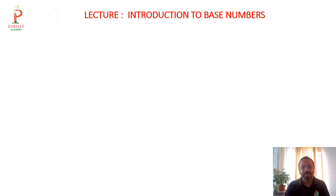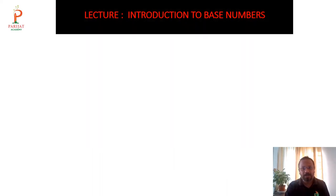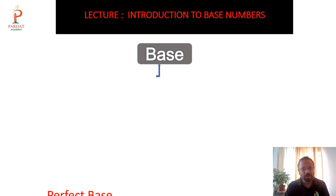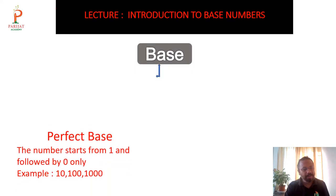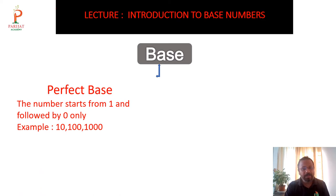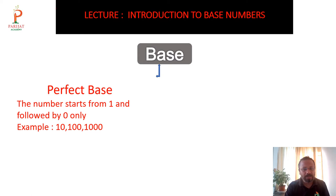Vedic mathematics has two types of bases. The first is called the perfect base. A perfect base is a number that starts from 1 and is followed by zeros only — for example, 10, 100, 1000, 10,000, one lakh. Such numbers are called perfect bases.